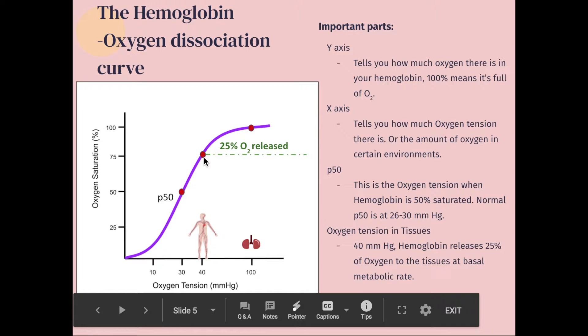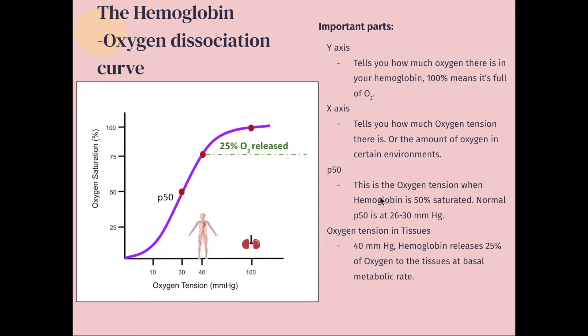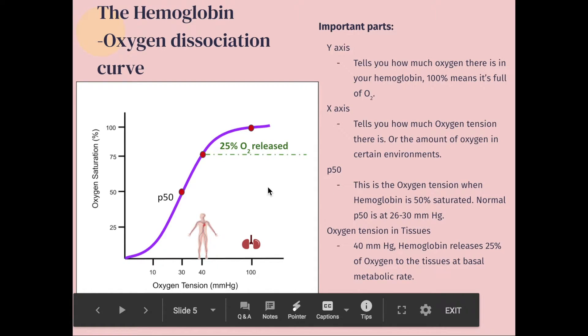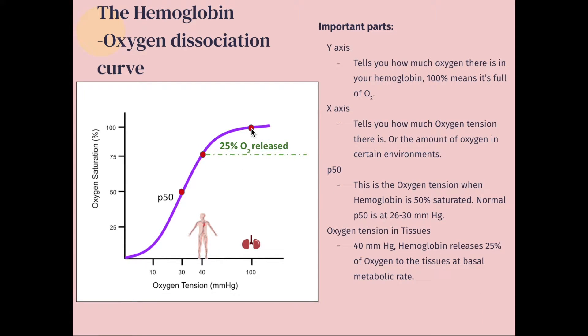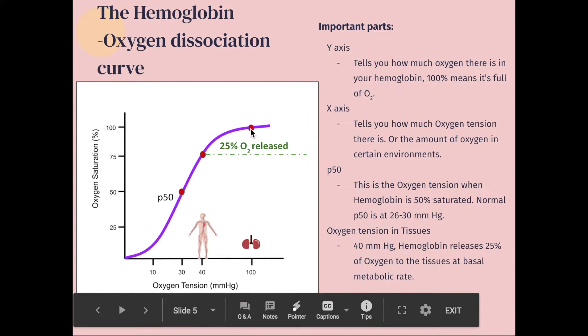And as you can see, these three dots represent the important parts of the curve. So at this point, we're talking about the release of oxygen. So from the very top, oxygen saturation is 100%. That's in your lungs. That makes sense, right? So that's what that dot is. It's at the 100.